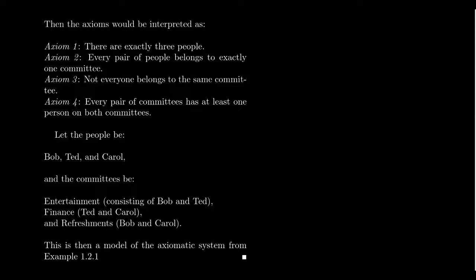The first theorem, interpreted with this language, says that every committee has exactly two people — and indeed, every committee has exactly two members. The committees are uniquely determined by the people on them; no two committees have the same two people. The third theorem states that given two distinct committees, there is exactly one person on both — axiom four says at least one, but theorem three strengthens this to exactly one. The fourth theorem states there are exactly three committees, which we see here. All theorems of fee-foe theory must be true for this model.